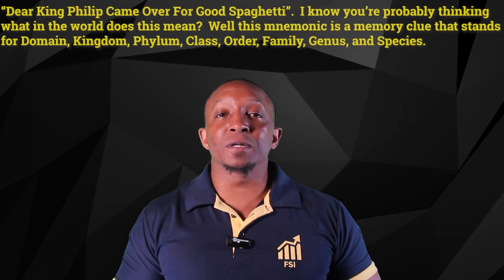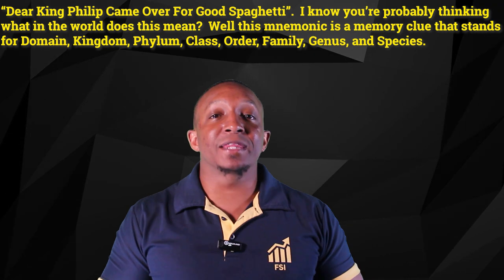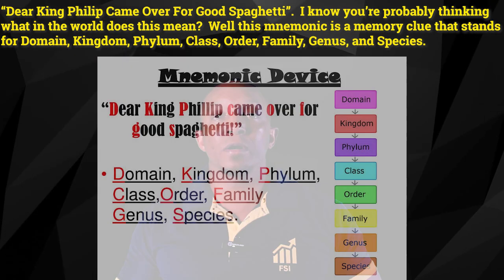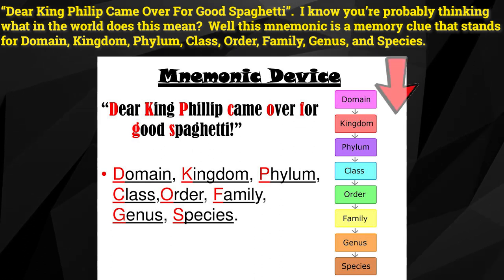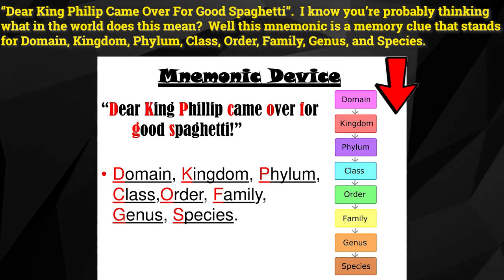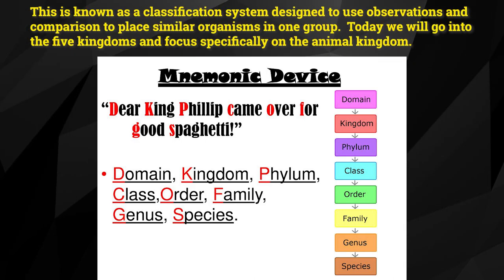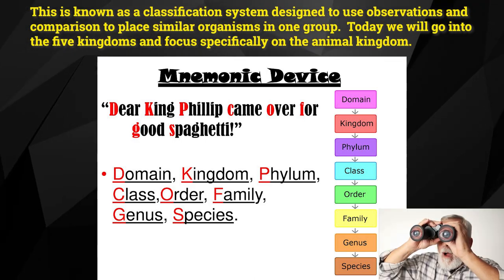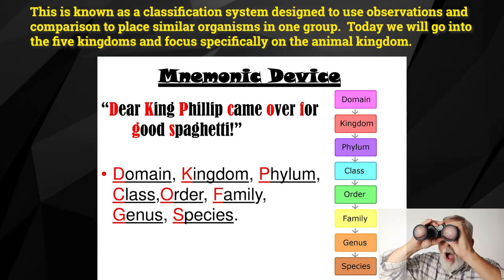King Philip came over for good spaghetti. I know you're probably thinking, what in the world does he mean by this? Well, this mnemonic is a memory clue that stands for kingdom, phylum, class, order, family, genus, and species. This is known as a classification system designed to use observations and comparison to place similar organisms in one group.